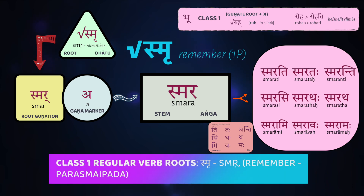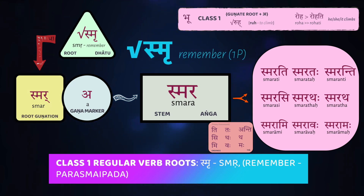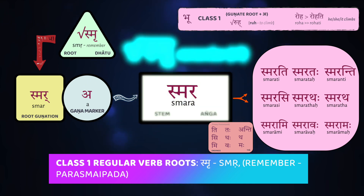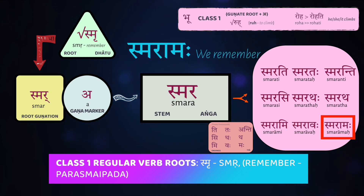Let's look at a couple more regular conjugations. The root smṛ, which means 'to remember,' will turn into smara in the stem, because the guṇa of ṛ is ar. So it becomes smar, and then you add your 'a' guṇa marker, and the stem becomes smara. Smarāmi, 'I remember'; smarāmaḥ, 'we remember.'